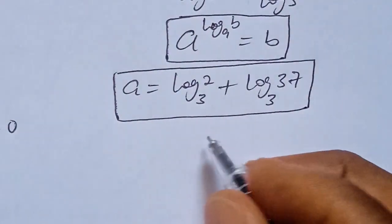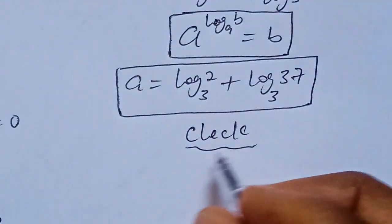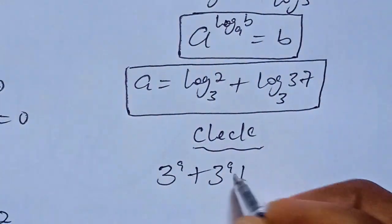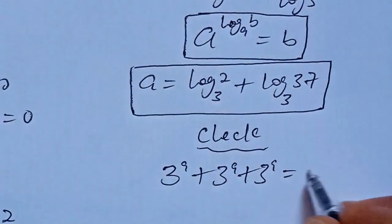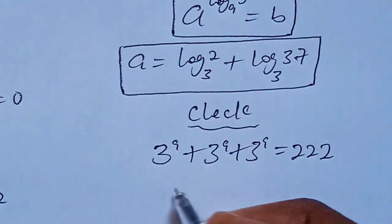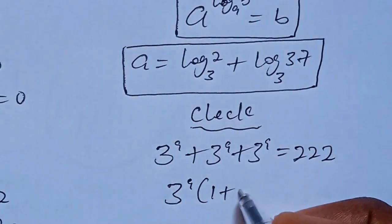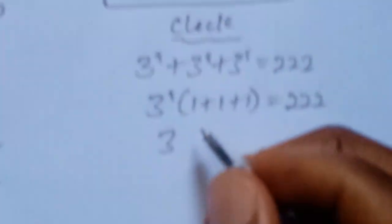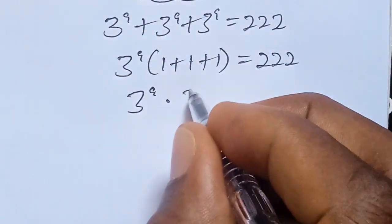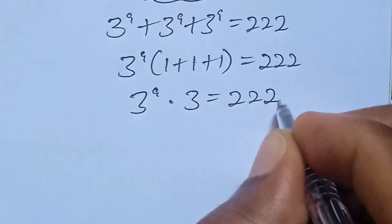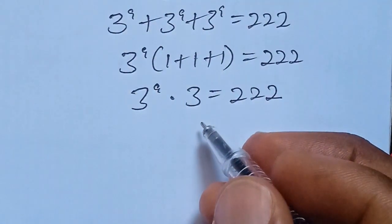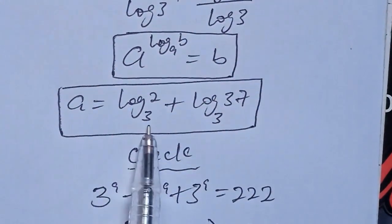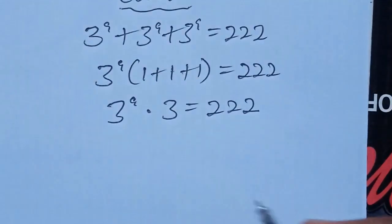To confirm this value, we need to check. From our question, we have 3 to the power of A plus 3 to the power of A plus 3 to the power of A equal to 222. It can be simplified as 3 to the power of A times the bracket 1 plus 1 plus 1 equal to 222. And that gives us 3 to the power of A multiplied by 3 equal to 222. From here, we can insert the value of A, which is A equal to log base 3 of 2 plus log base 3 of 37.